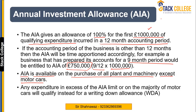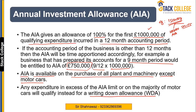For example, suppose there is capital expenditure of £1.5 million and the accounting period is 12 months. Up to £1 million, we will get AIA immediately. On the remaining £500,000, we will get the Written Down Allowance (WDA). Similarly, if on a motor car we are not able to get AIA, then we will be able to get the Written Down Allowance on the motor car.